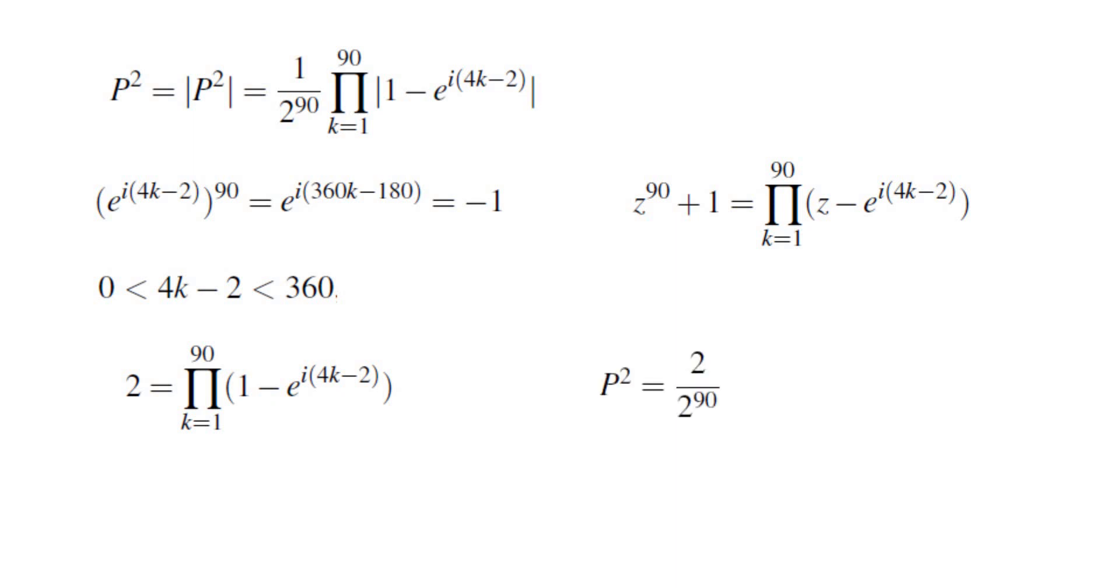which means P² = 2/2^90. Taking the square root, which is allowed because we know P is positive, we obtain P = 1/√(2^89).